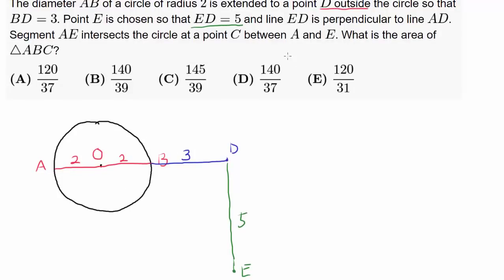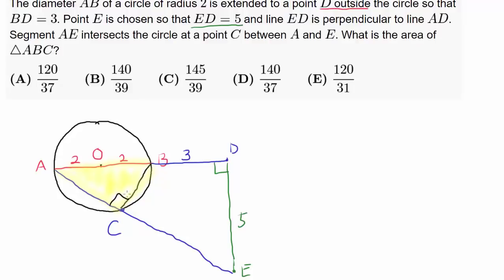Continuing, segment AE intersects the circle at point C between A and E. So we connect A and E, intersecting the circle at point C, and we wish to find the area of triangle ABC. Is there anything we know about triangle ABC right away? Yes — we know angle ACB is a right angle, so it's a right triangle.